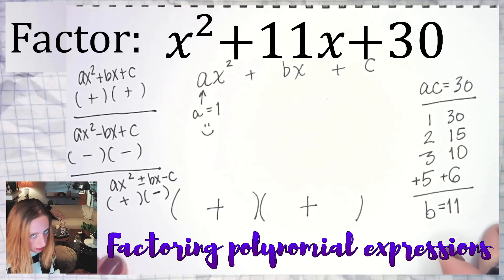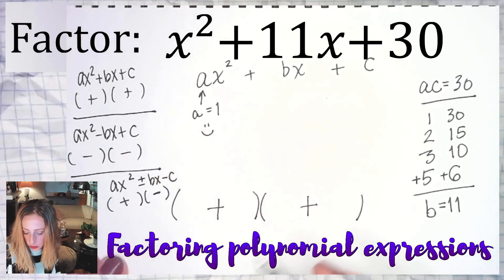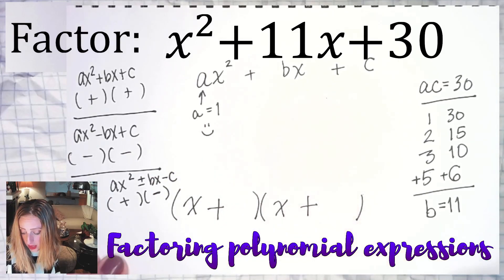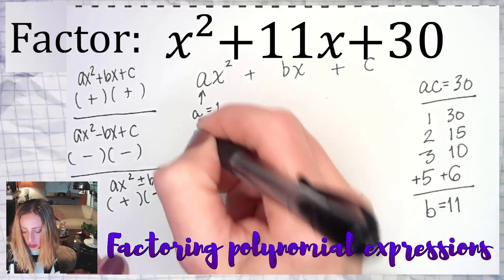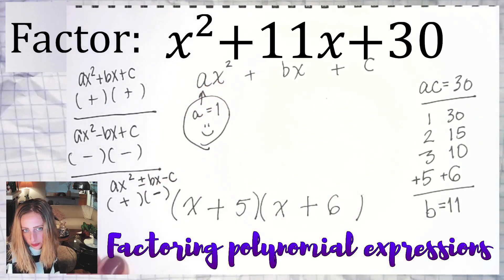If you're going to do this the first way, x squared, we don't have a lot of options. What multiplies to give us x squared? x and x. Here's the five and the six. Boom. When does this trick work? Only when a is one.